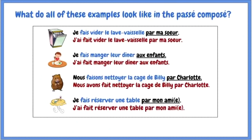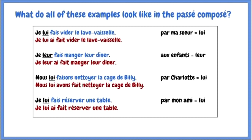Now we have to look at the passé composé. Simple — we're just putting faire into the passé composé. J'ai fait vider le lave-vaisselle par ma sœur. J'ai fait manger leur dîner aux enfants. Nous avons fait nettoyer la cage de Billy par Charlotte. J'ai fait réserver une table par mon ami. And with the pronouns: je lui ai fait vider le lave-vaisselle. Je leur ai fait manger leur dîner. Nous lui avons fait nettoyer la cage de Billy. Je lui ai fait réserver une table.